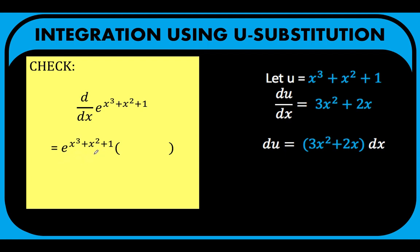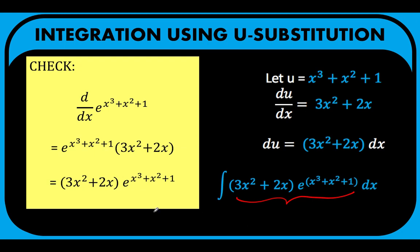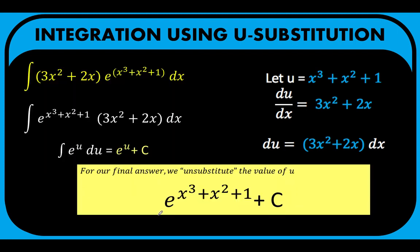We multiply by the derivative of the inner function, which is 3x squared plus 2x. Rearranging these factors using the commutative property, we notice that this expression is the integrand of the problem we were solving. So the derivative of our answer is equal to the original function. Conversely, the antiderivative of that function is our answer. This verifies that our final answer is correct.